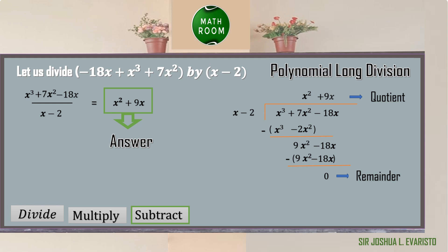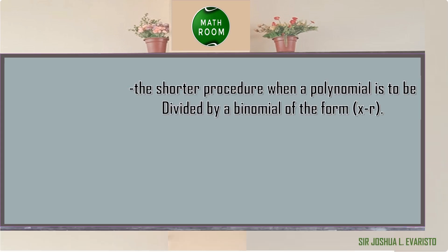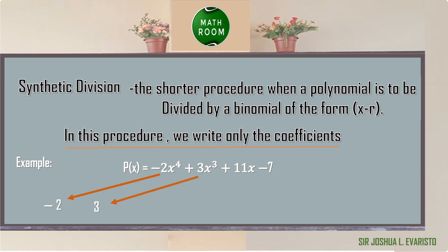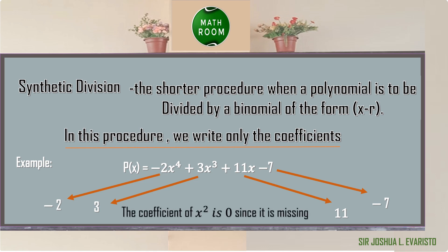There is a shorter procedure when a polynomial is divided by a binomial of the form x minus r. This method is called synthetic division. In this procedure, we write only the coefficients. For example, for p of x equal to negative 2x to the fourth plus 3x cubed plus 11x minus 7, the coefficients are negative 2, 3, 0 for the missing x squared term, 11, and negative 7 as the constant term.